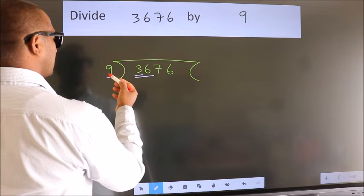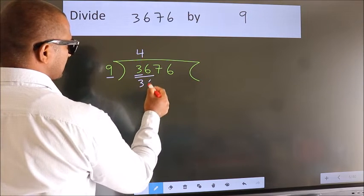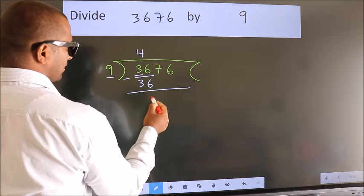When do we get 36 in 9 table? 9 times 4 is 36. Now, we should subtract. We get 0.